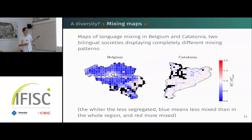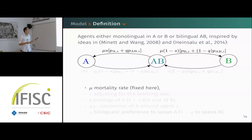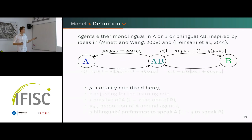We have these two very different interesting patterns, and we want to know what mechanisms lead to one or the other and what changes between them. To do so, we consider an agent-based model of language shift where agents belong to one language group — monolingual in A, monolingual in B, or bilingual in the middle.